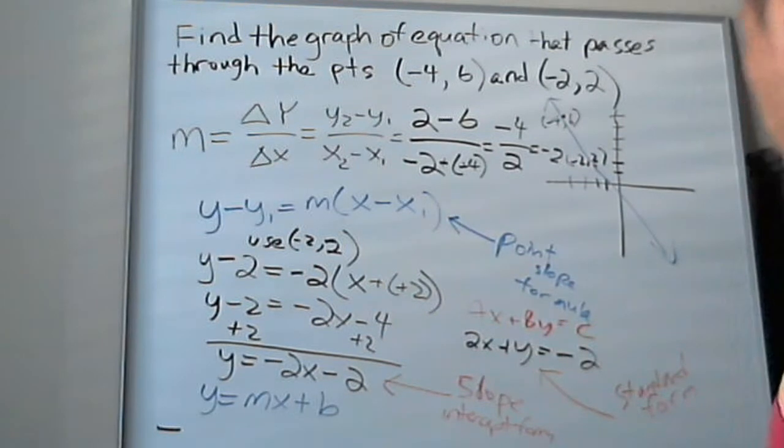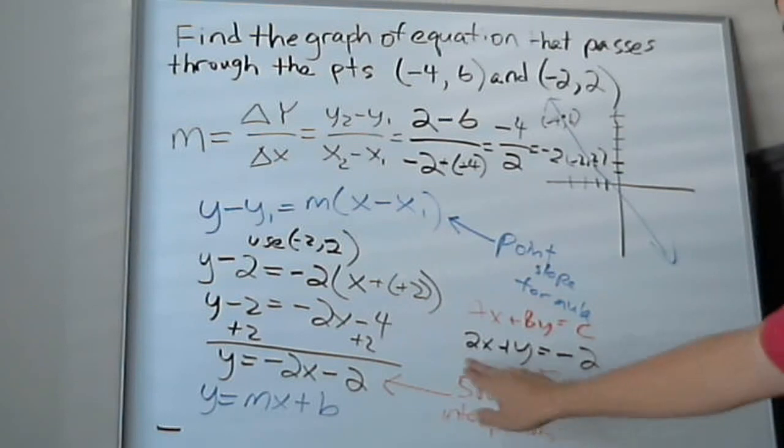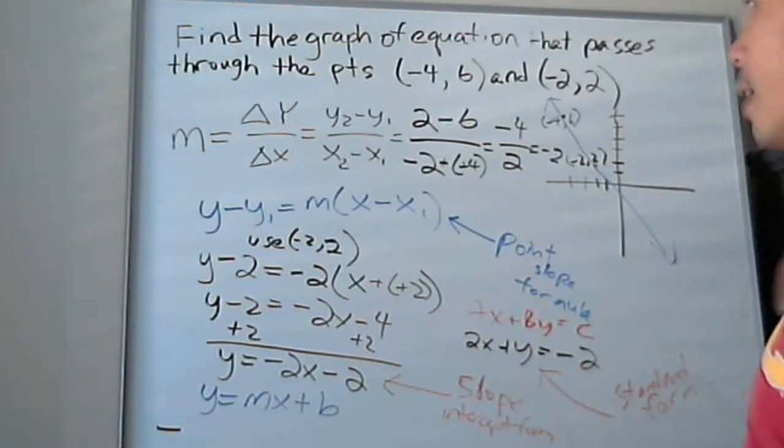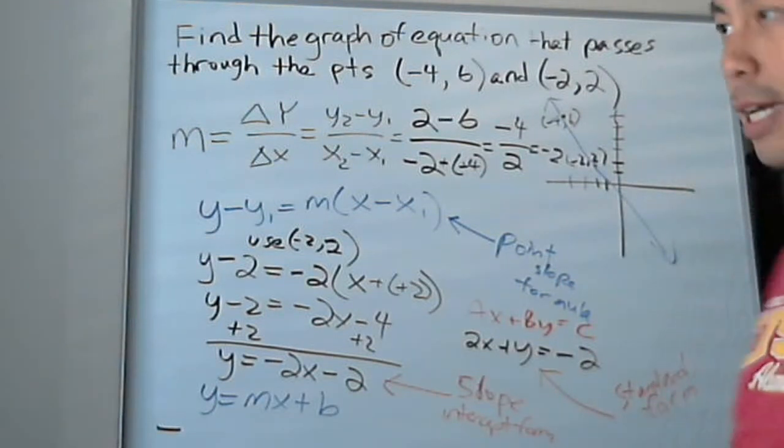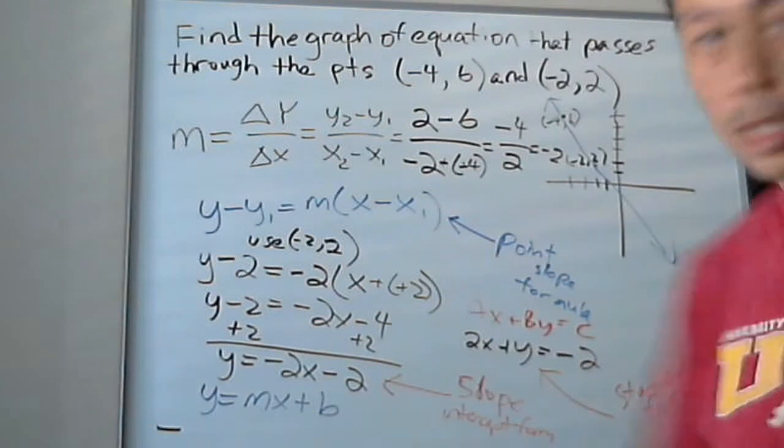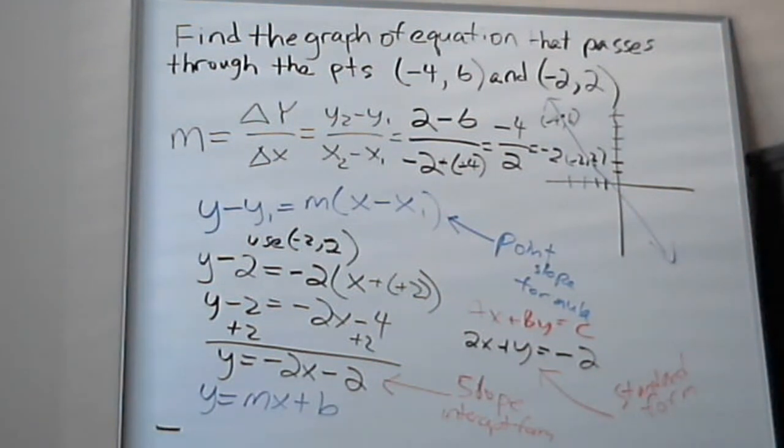If they ask you for the standard form, you have to make sure you have the format ax plus by equals c. You see it's in the format now ax plus by equals c. So a is 2, b is 1, because it's 1y, and c is negative 2. So now you learned how to find a linear equation when you have two points on the graph. And the next thing we're going to learn is learning how to find x and y intercepts.